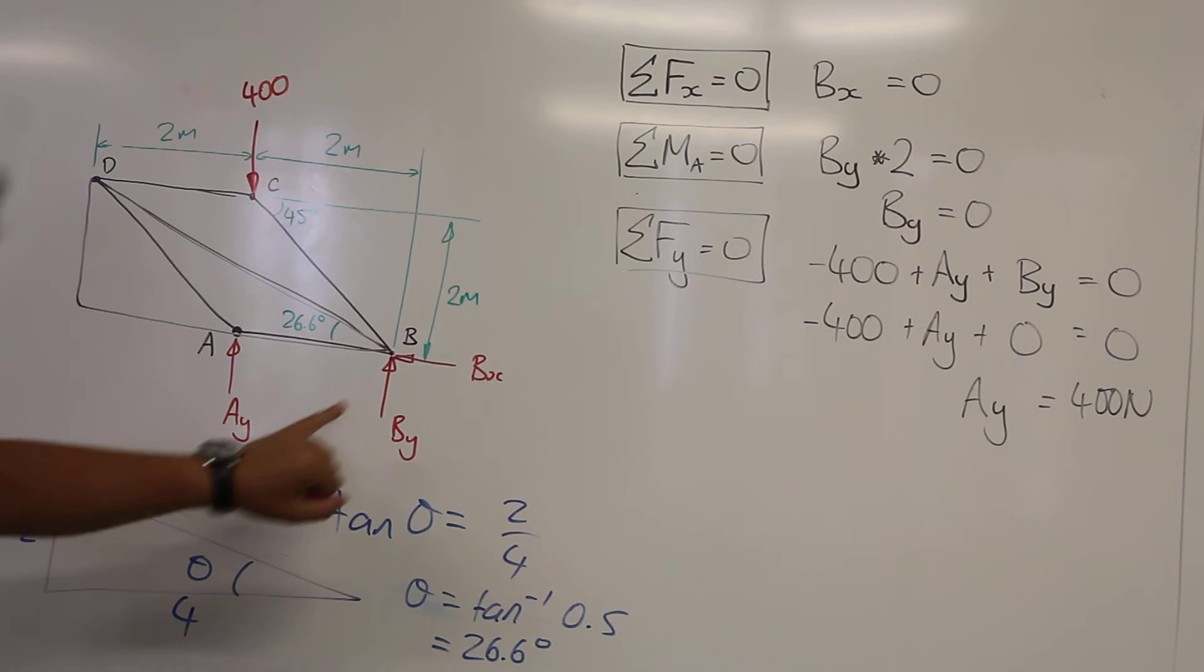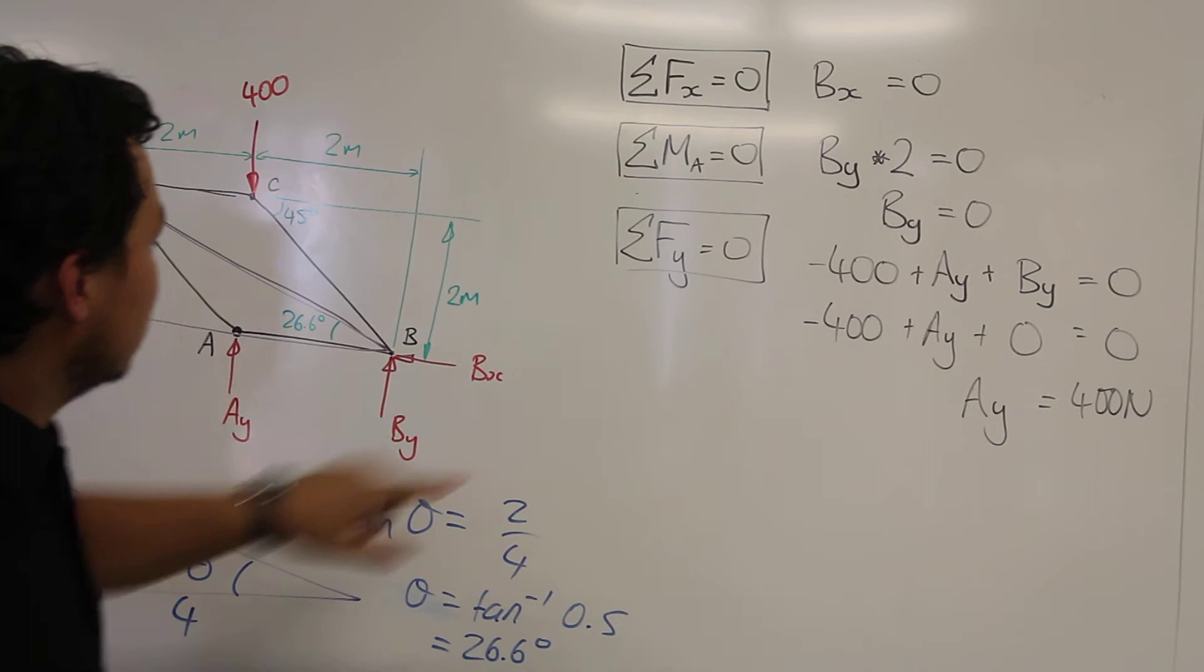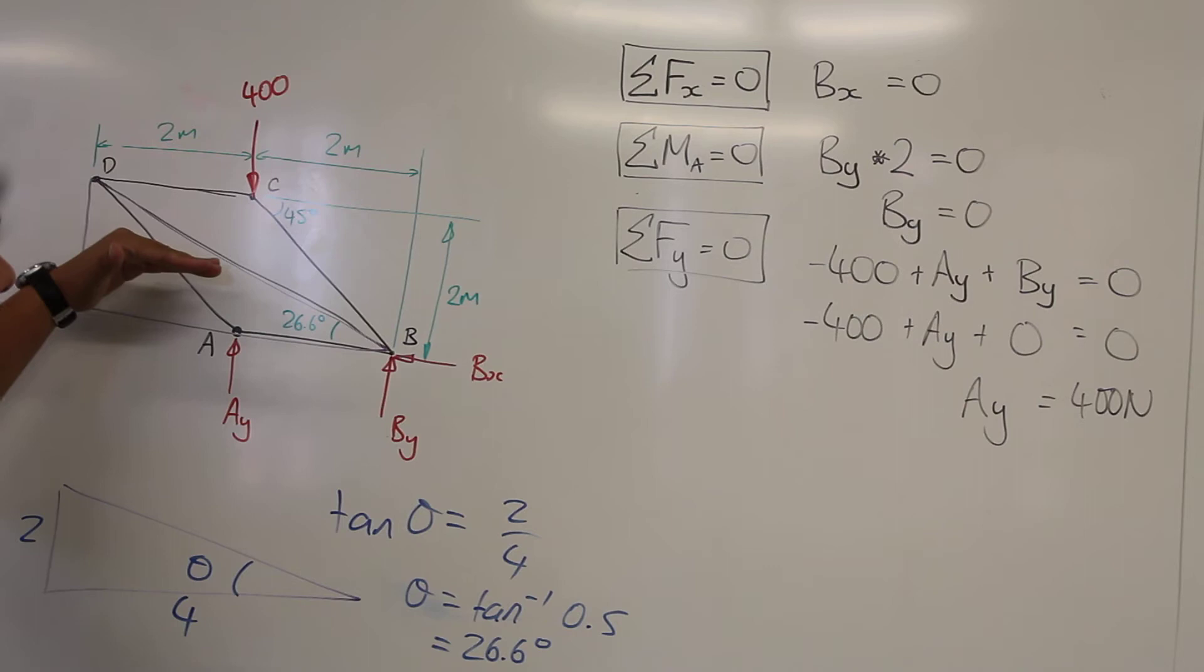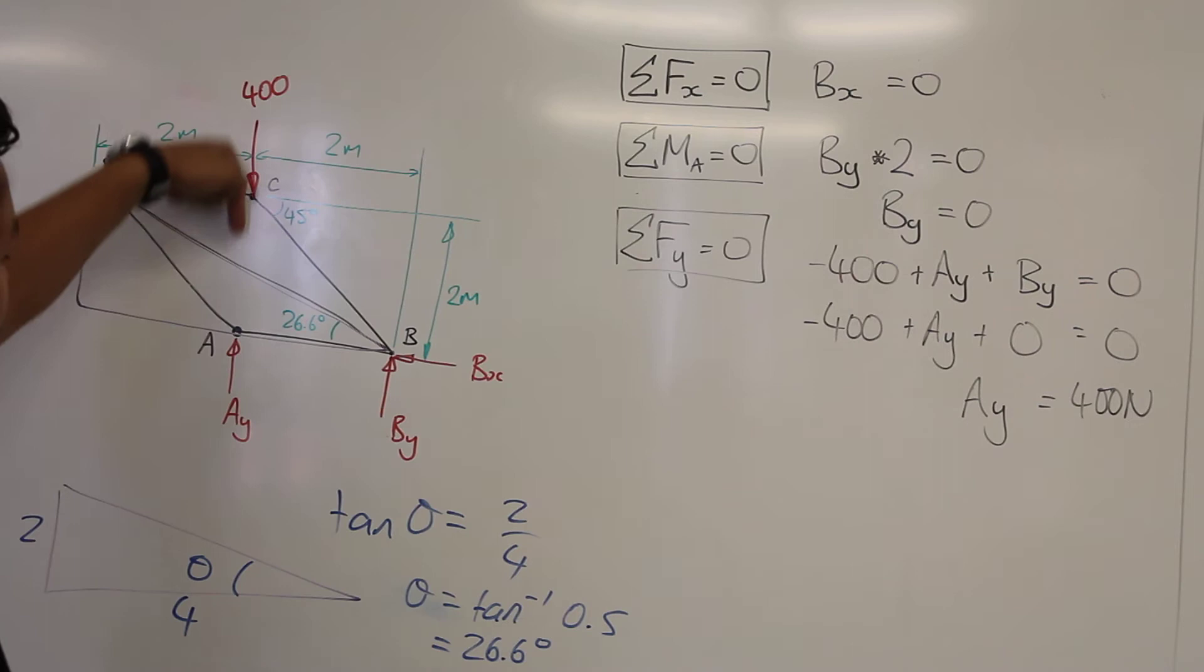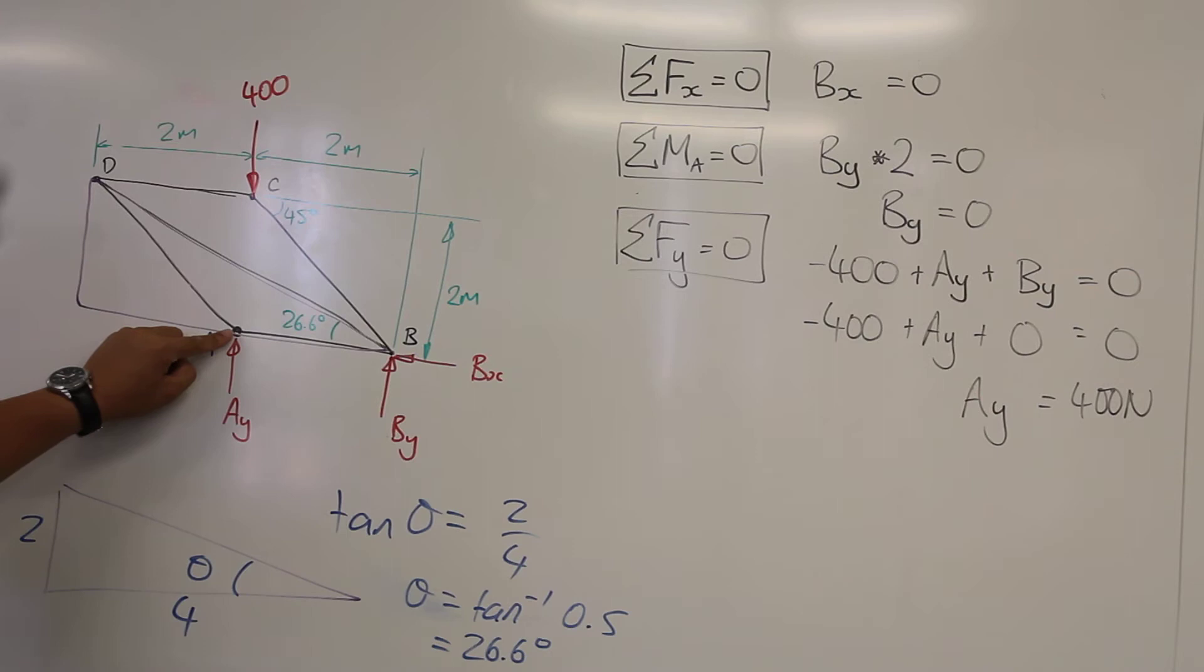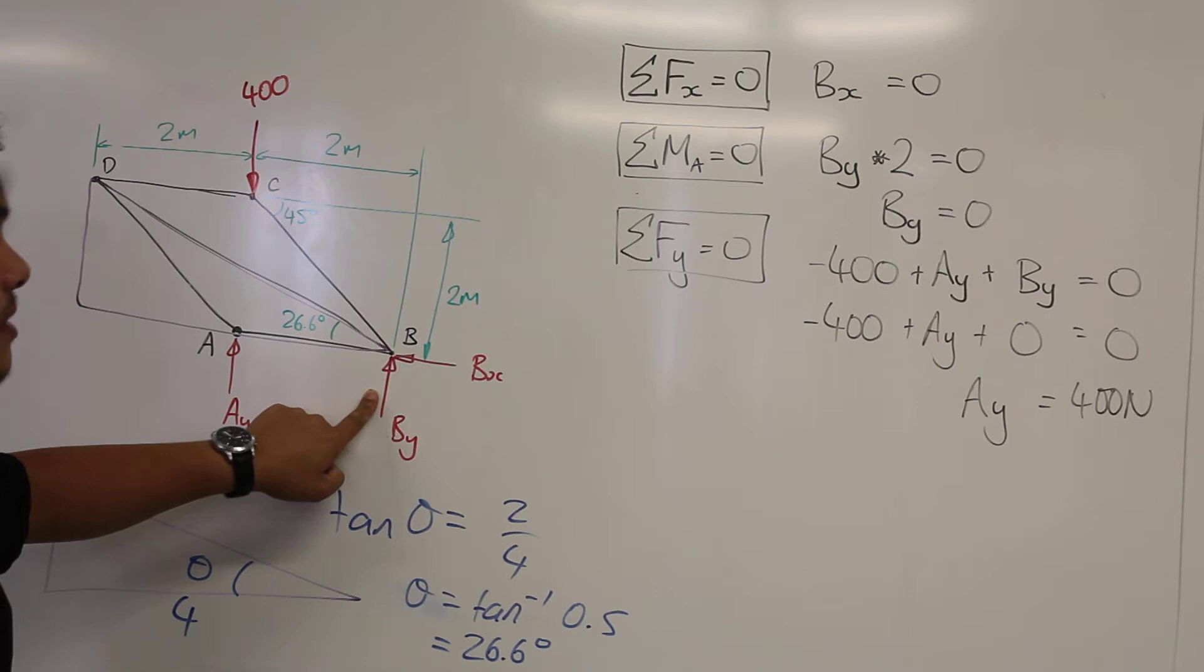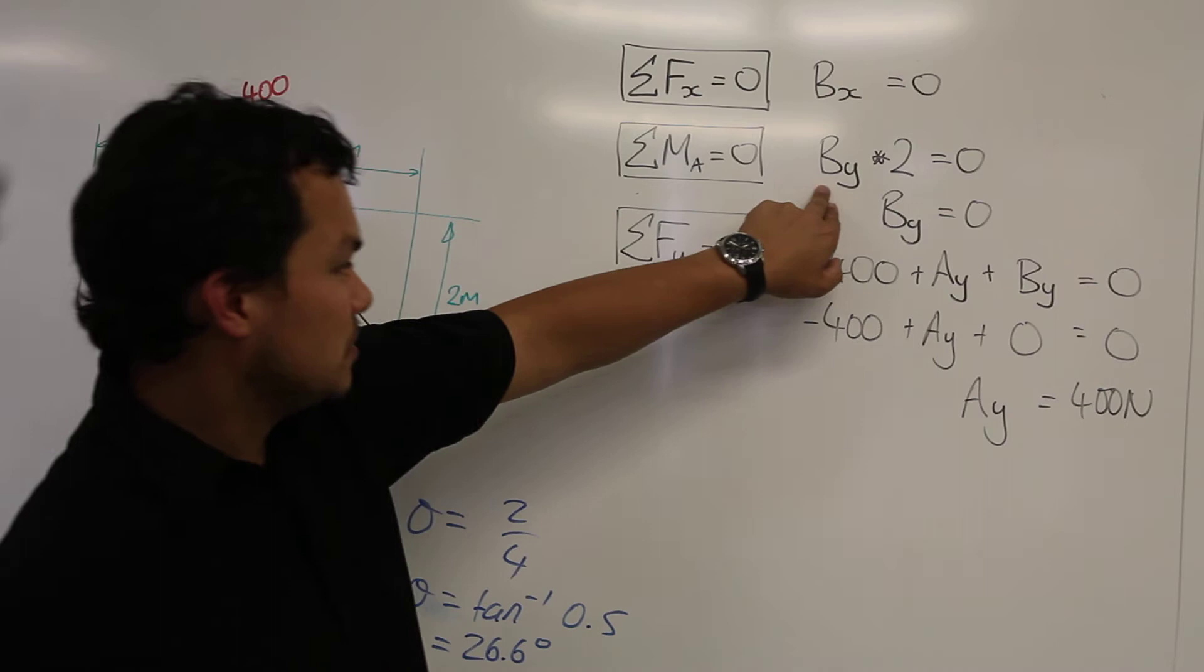Okay, so from here, we can calculate the reactions for this entire structure. Balancing the forces in the x direction, we have Bx equal to 0, because there's no other forces in the x direction. Moments around point A, we have 400 newtons going straight through point A, our reference point, and Bx going through that reference point as well. Ay going through the reference point, so the only force creating a moment is this one here, By times its perpendicular distance of 2 meters. So we have that written here, and we get a value of 0.